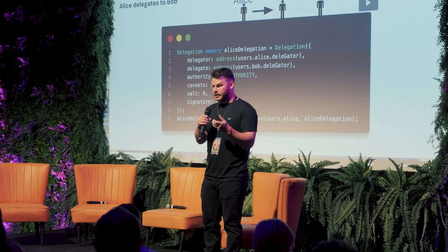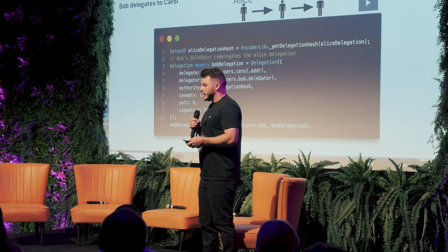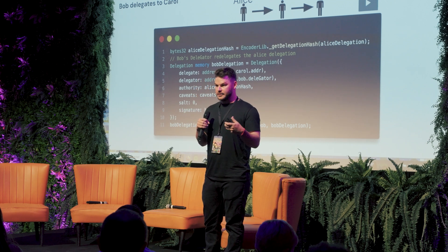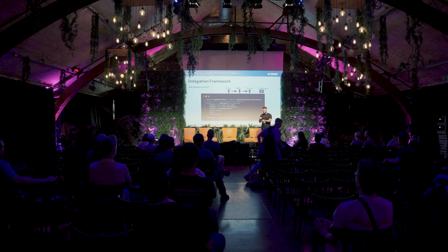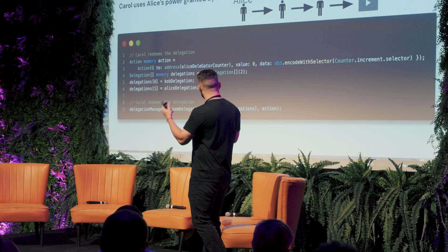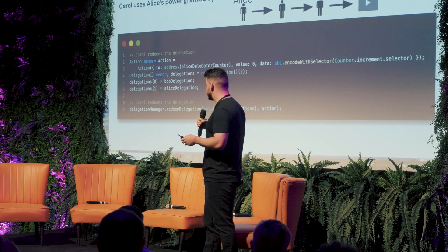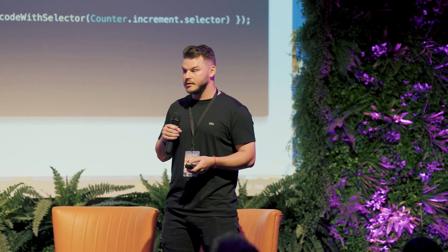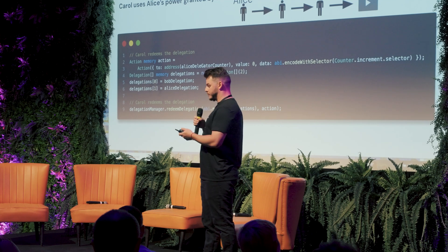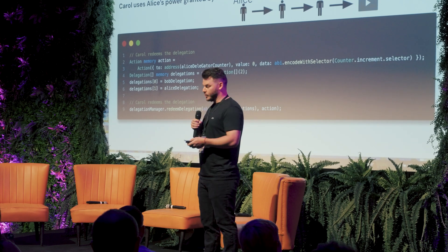Alice, Bob, Carol — pretty classic stuff. Alice is giving a delegation to Bob, so she's the delegator and the delegate is Bob. The authority — she's creating the first one in the chain, so it's the root authority. She's going to sign that delegation and add her signature. Then Bob takes the hash of Alice's delegation and adds it into the authority, adds Carol to the delegate, and Bob is the delegator — then signs it and gives that to Carol. Carol can then build the action she wishes, as long as it's within the conditions of those caveat enforcers, build up the array of delegations from Alice and Bob, encode that into bytes, and pass it into redeem delegation on the delegation manager. Now she can perform an action on behalf of Alice.